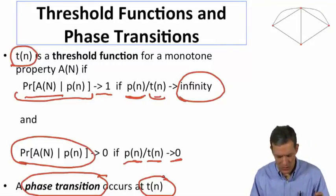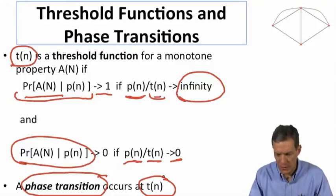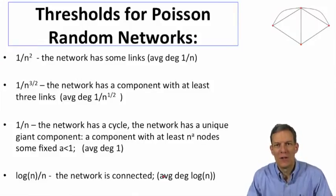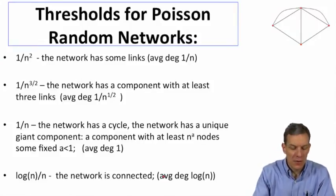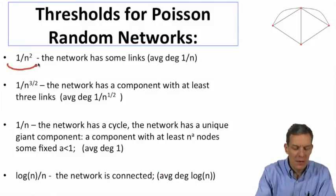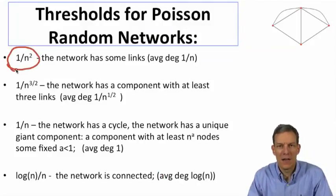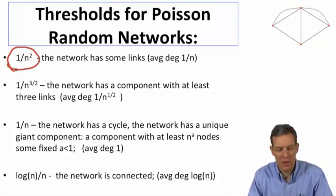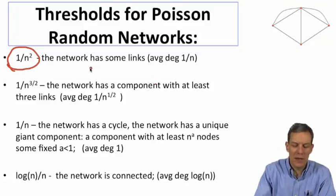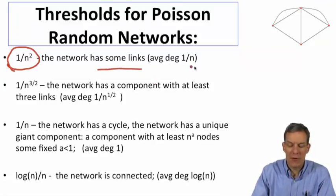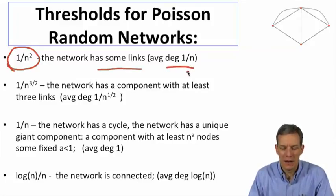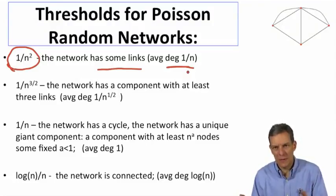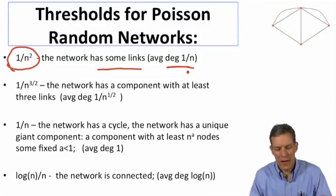So let's have a look at some threshold functions and put a little more meat on this. The first question is: when do you begin to get some links? If p is much smaller than 1/n², you're not going to get any links — with high probability you won't see any links at all. If p is bigger than 1/n², then the network is going to begin to have some links. This is basically where the average degree is 1/n, so you have a fairly small average degree, but when you aggregate across a bunch of nodes, somebody is likely to have at least one link.